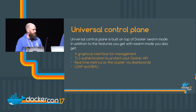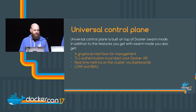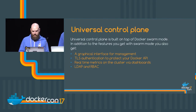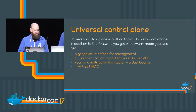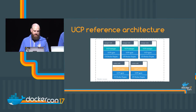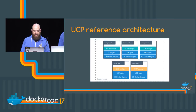Universal Control Plane takes what you get in swarm mode and adds a few things: a graphical interface for management, TLS authentication to protect your Docker API by default, real-time metrics on the cluster via dashboards, and LDAP and RBAC. That's important if you have multiple teams using the cluster. The open source cluster doesn't have LDAP functionality beyond basic user rights. With UCP, there's an LDAP backend you push into, you create teams within the cluster, and give them the access rights they need. The UCP architecture is fairly similar to swarm - Docker engine, UCP agent, and a manager - just another layer on top of swarm mode.